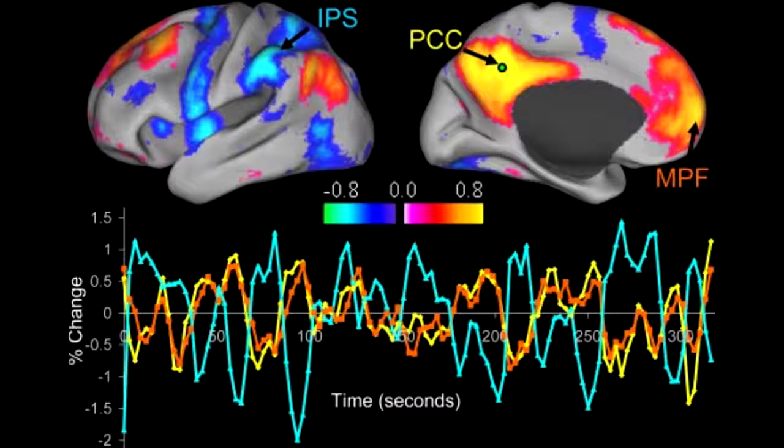The blue areas are highly active when the subject interacts with the world, but turn off in the resting state. The red-orange areas are most active in the resting state, and are called the default mode network. Other brain areas are also more active when you are resting, and these areas can be further divided into groups of areas that have common patterns of activity. This is a new and intense area of research, and it will take time to sort out all the resting states and their functions.